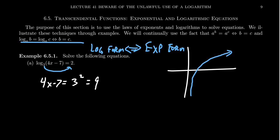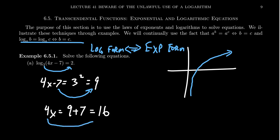After that, moving things to the other side is straightforward. We add 7 to both sides to get 9 plus 7, which is 16. Then divide both sides by 4 to get x equals 16 over 4, which equals 4. When working with logarithmic equations, you must be cautious — their domains are restricted. Plugging x equals 4 back in gives 4 times 4 minus 7, which is 9, and log base 3 of 9 is indeed 2. Solution checks out.